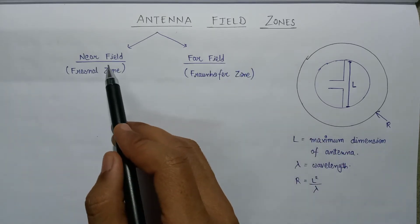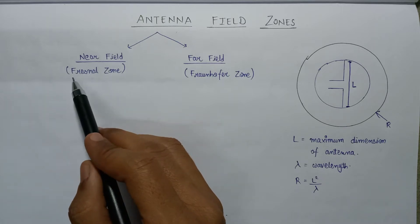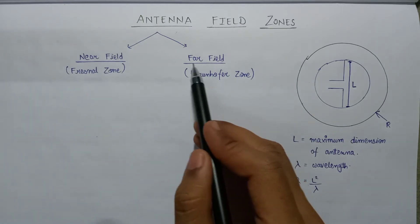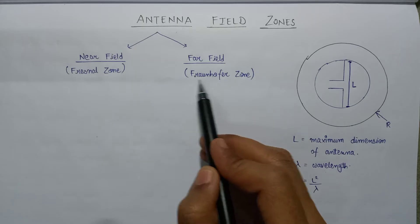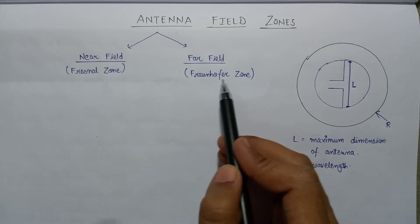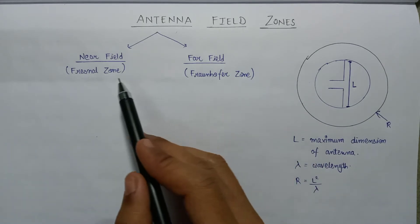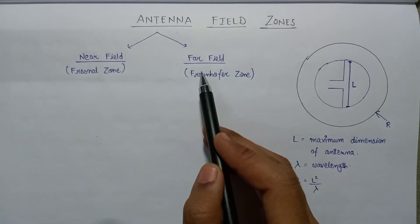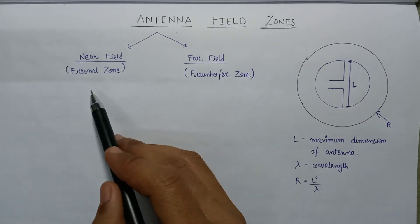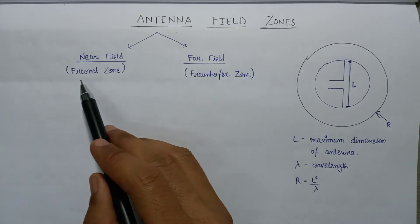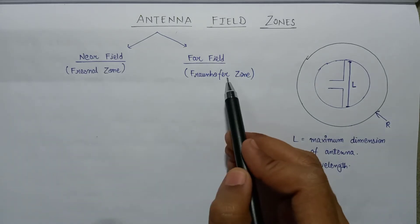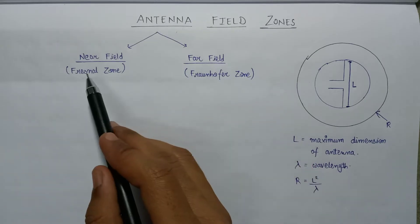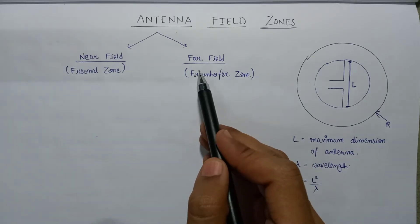The near field is also called the Fresnel zone, but the far field is known as the Fraunhofer zone. These are the alternative names for the near field as well as the far field. In an examination, the examiner can also ask for the Fresnel zone or the Fraunhofer zone separately, so we have to specify the near field and the far field for that question.